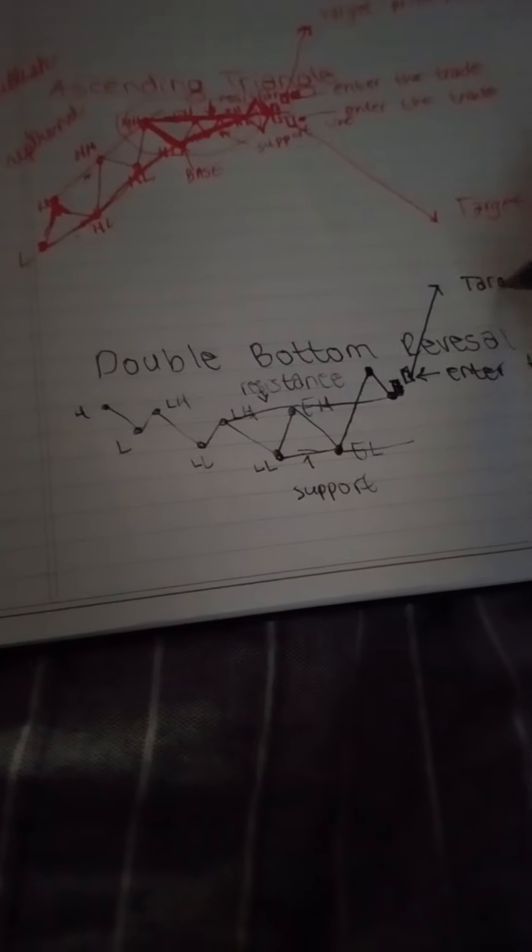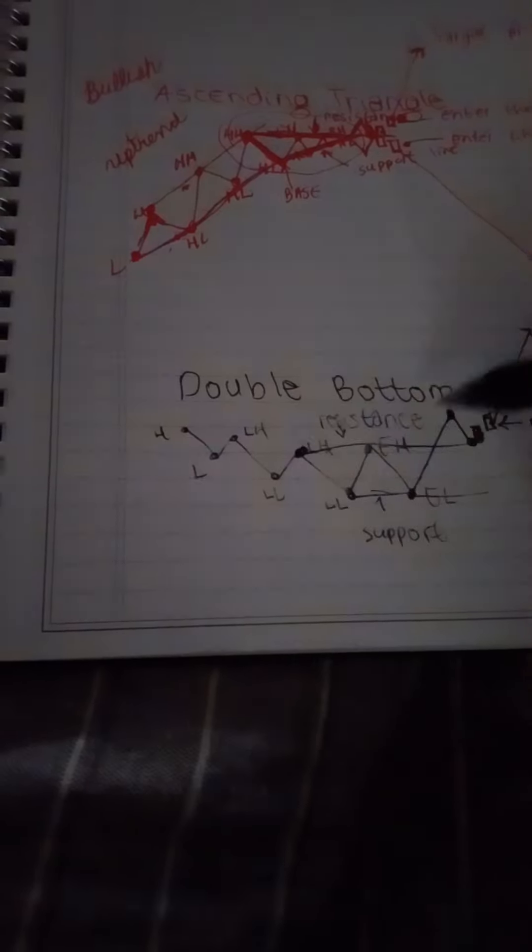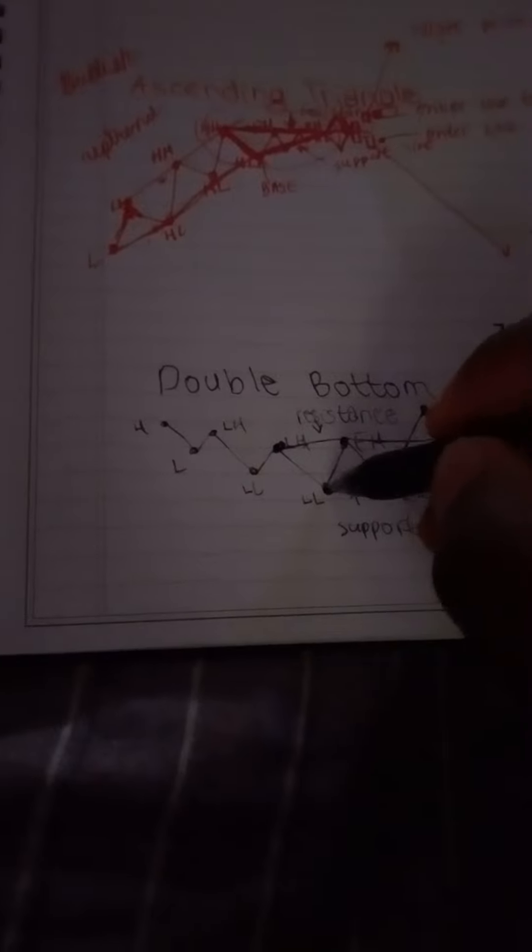With the expectation that price will continue to rise. Because your target price would be whatever the price is here, which is resistance minus whatever the price is here, which is support plus the close of this candle above that one right there.